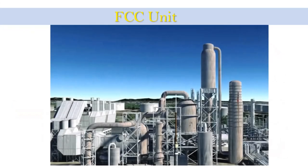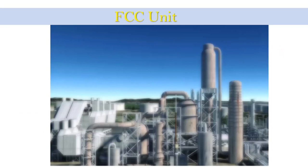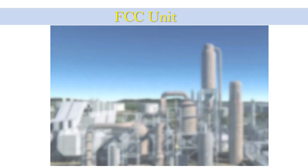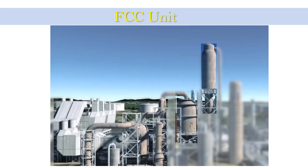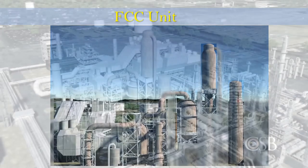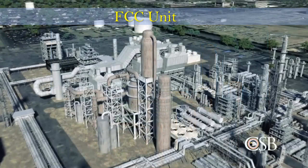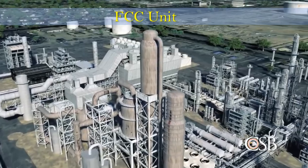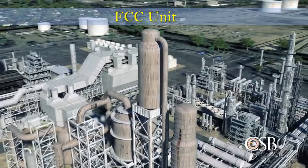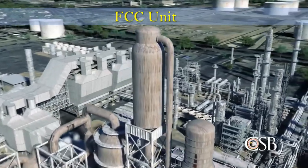The FCC unit comprises four principal component systems. This video summarizes the process and function of each component. An important part of the refining process takes place in the facility's fluid catalytic cracker, or FCC unit.